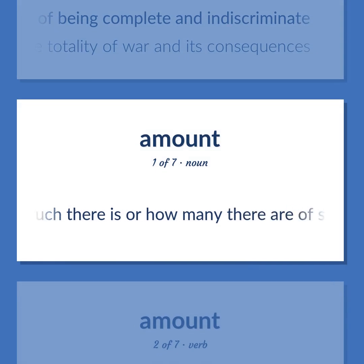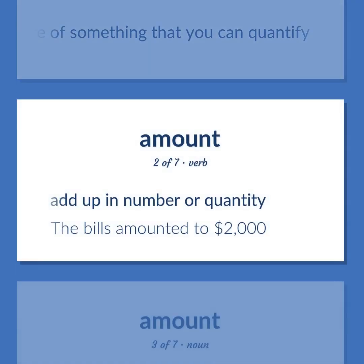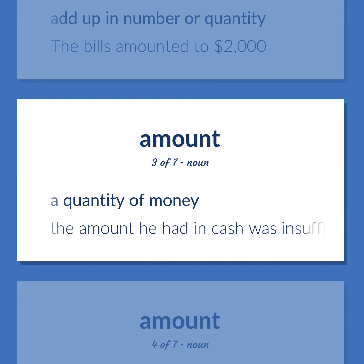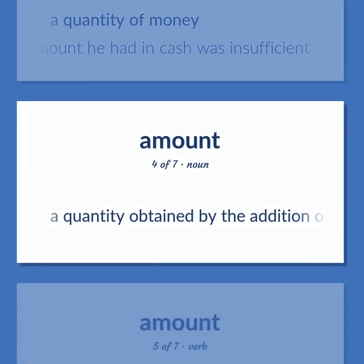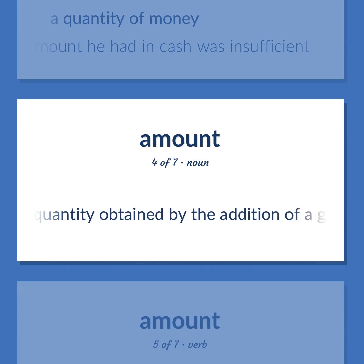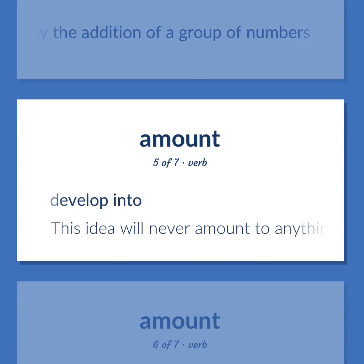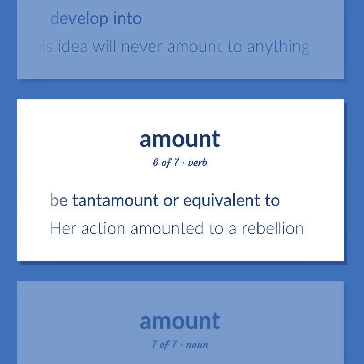Amount: How much there is or how many there are of something that you can quantify. Add up in number or quantity — the bills amounted to $2,000. A quantity of money — the amount he had in cash was insufficient. A quantity obtained by the addition of a group of numbers. Develop into — this idea will never amount to anything. Be tantamount or equivalent to — her action amounted to a rebellion.